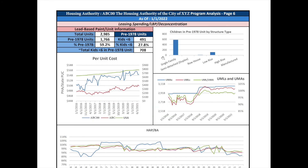The final page includes a detailed program per-unit cost on a longer timeframe, as well as children potentially in units with lead-based paint concerns, unit months leased, housing assistance payments, and budget authority — items that are also available in the two-year tool. These graphs give a much longer timeframe, which can help PHAs identify various trends to understand changes in the program or local market and how to adjust the program as needed.